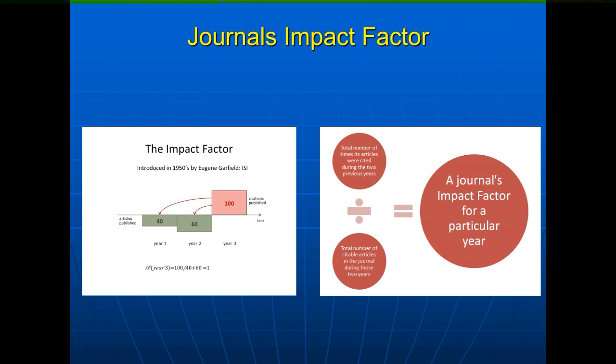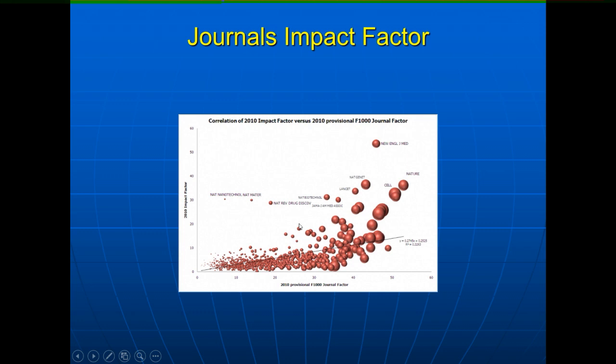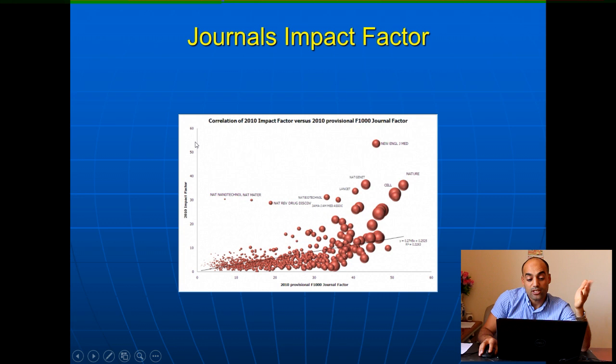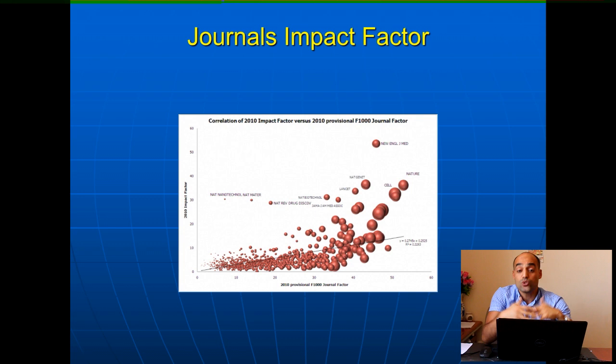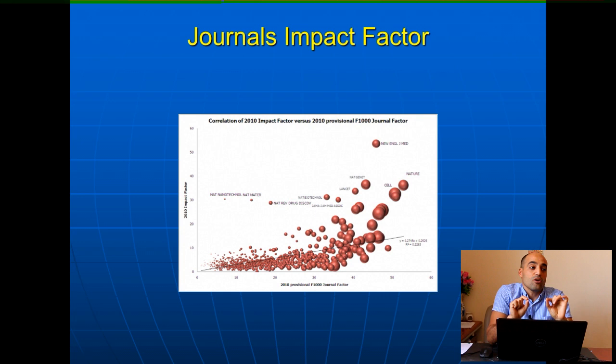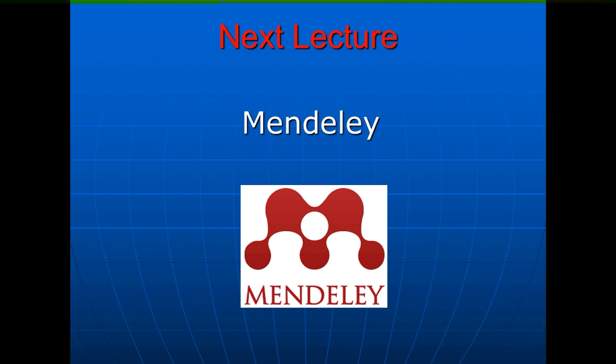For example: in year one a journal published 40 articles, in year two it published 60 articles, and in year three those articles received 100 citations total. That means on average each article was cited once. So 100 divided by the total 100 articles gives an impact factor of 1. High-impact journals like the New England Journal of Medicine have an impact factor exceeding 50. The more a journal's articles are cited - like shares on social media - the higher its impact factor. The h-index for authors also depends significantly on citation count.